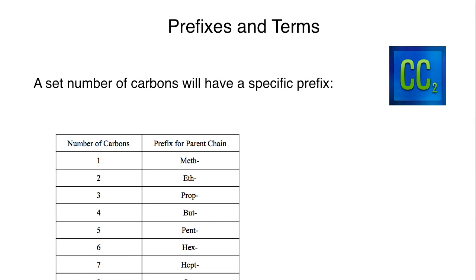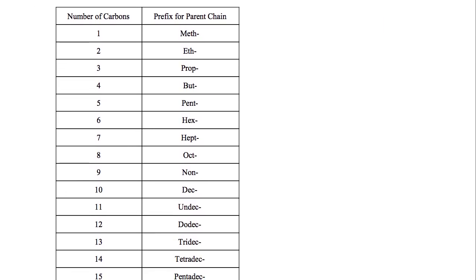Just hold in there if some of this doesn't make sense right away — most students who have been exposed to some form of naming are used to this. When we have a set number of carbons, we will have a specific prefix associated with that. This can continue on and on, but in general the first 10 are going to be the most important and will cover the bulk of examples you'll see in an undergraduate class. I have a table here showing the number of carbons and the prefix associated with the parent chain.